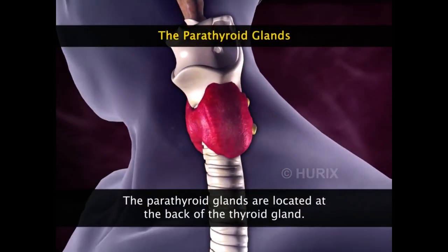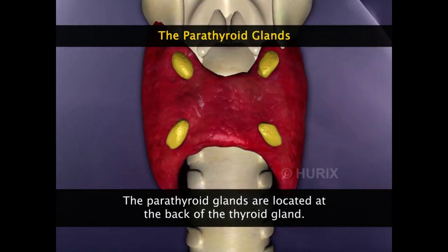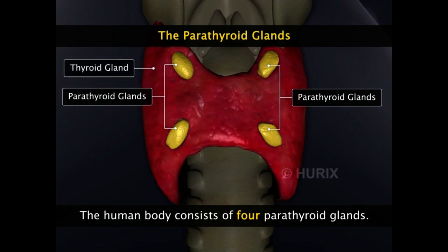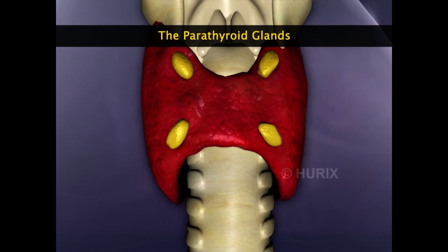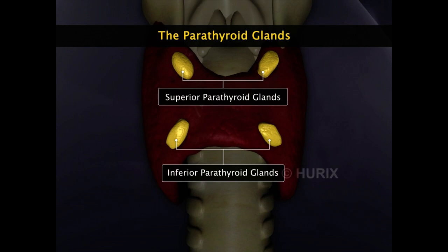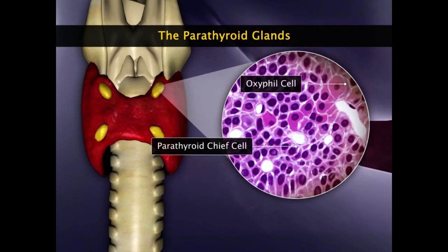The parathyroid glands are much smaller endocrine glands located at the back of the thyroid gland. The human body consists of four parathyroid glands, two located in each lobe of the thyroid gland. The two parathyroid glands located higher or closer to the head are called the superior parathyroid glands, and the ones located below them are the inferior parathyroid glands. The parathyroid gland consists of two types of cells: the parathyroid chief cells and the oxyphil cells.